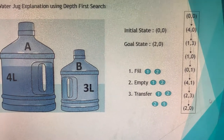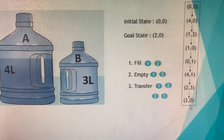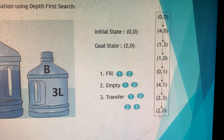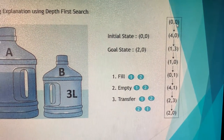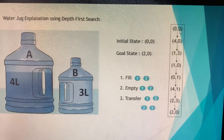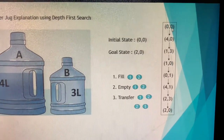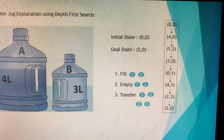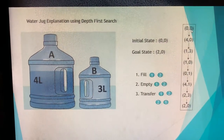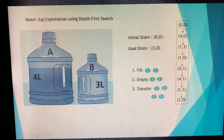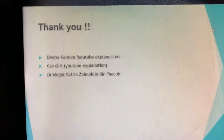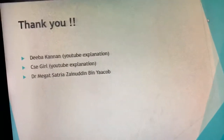Finally, we empty jug B to reach our goal state: two liters in jug A and zero liters in jug B, giving state (2, 0). This is how we get from the initial state to the goal state. I have shown you the straight path from initial to goal state so that you can understand it clearly.